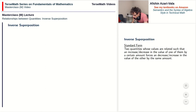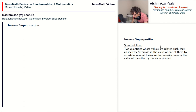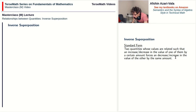Inverse superposition problems are the kinds of problems where there are two quantities whose values are related such that an increase or decrease in the value of one of them by a certain amount forces a decrease or increase in the value of the other by the same amount. One goes up by two, the other goes down by two, and if the value of one decreases by a certain amount, the value of the other increases by the same amount. So if one goes down by five, the other goes up by five. This kind of relationship is known as inverse superposition.